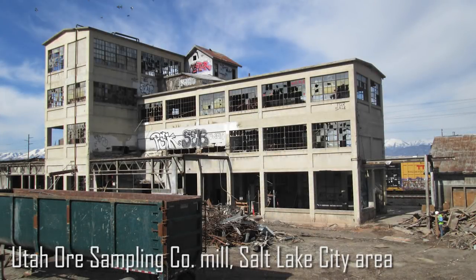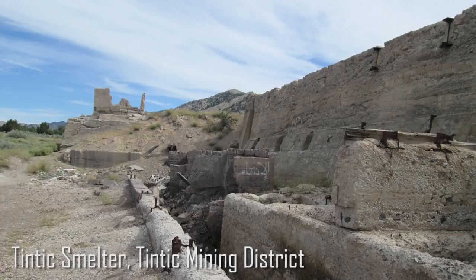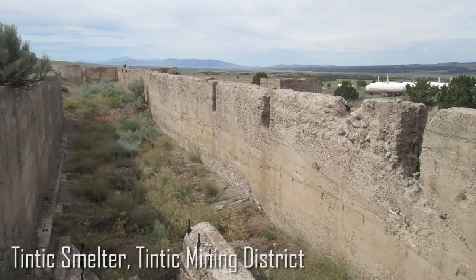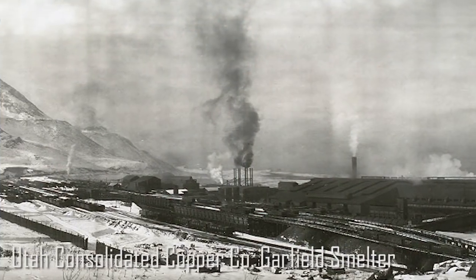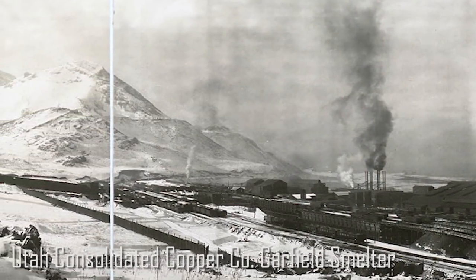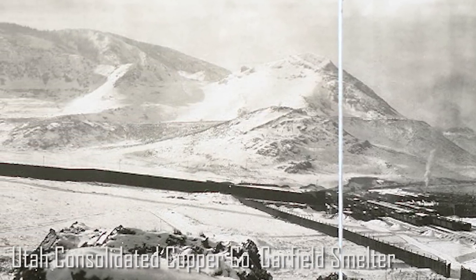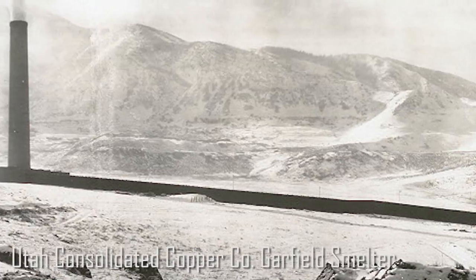Here's a few of the different smelters that were in the region. This building is still standing, they're kind of slowly demolishing it. It's down in Murray. These are the ruins in the Tintic Mining District of another one of the smelters. And this here, if you guys came in on I-80, you drove past this site. This is where Kennecott Rio Tinto smelter still is. This was what the facility looked like when it was originally built in the early 1900s.